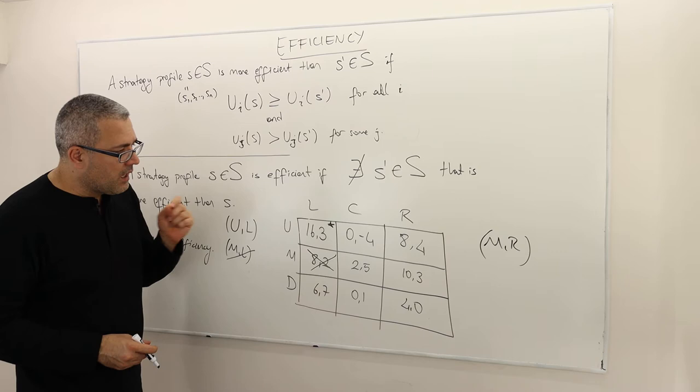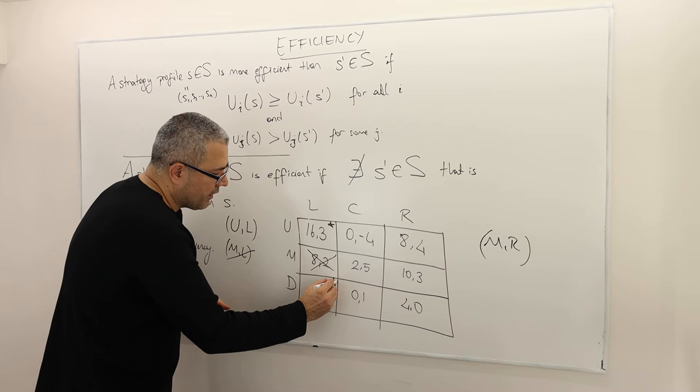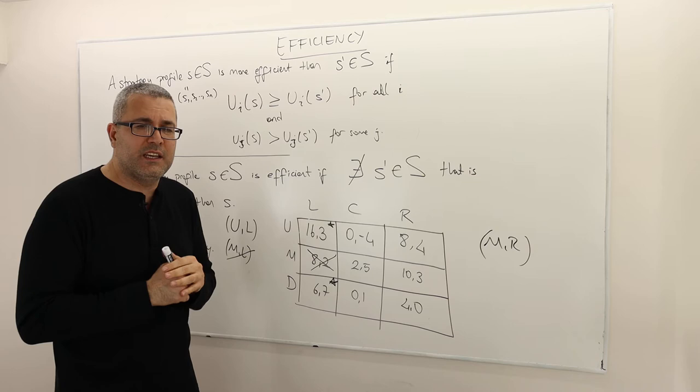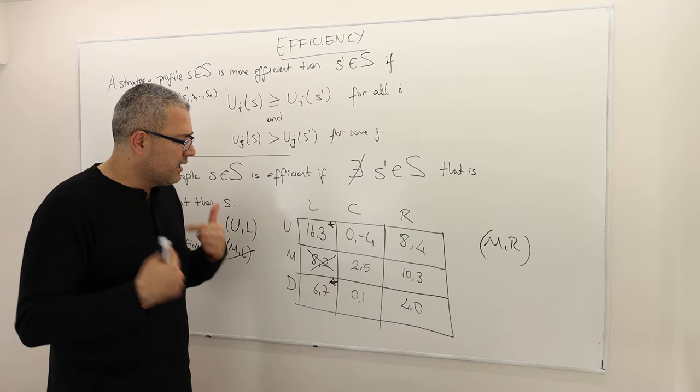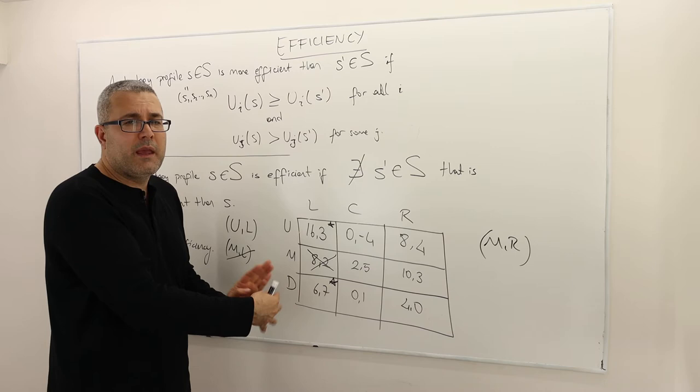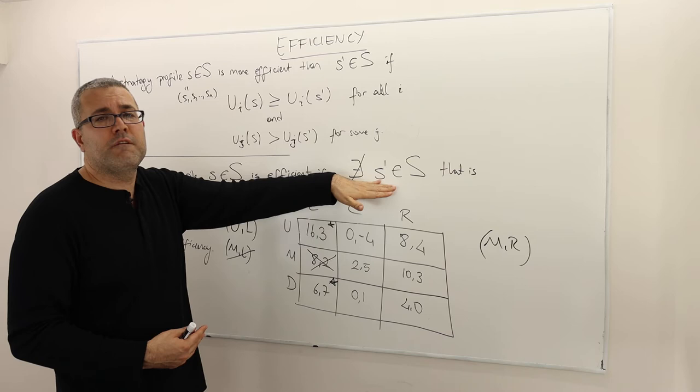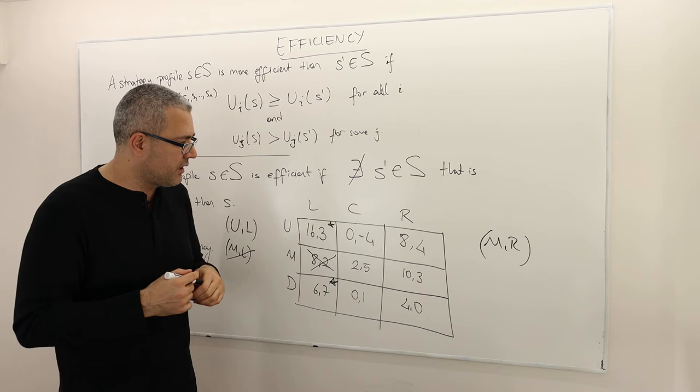What about DL? So 6-7. I can immediately say this is also efficient — I'll put a star here. Why? Because the 7 payoff for the second player is the highest he can achieve. There's no other payoff in this game where player two can get seven or more. So any other strategy profile is definitely going to make player two worse off. Therefore, there is no more efficient strategy than DL — DL is an efficient strategy profile.